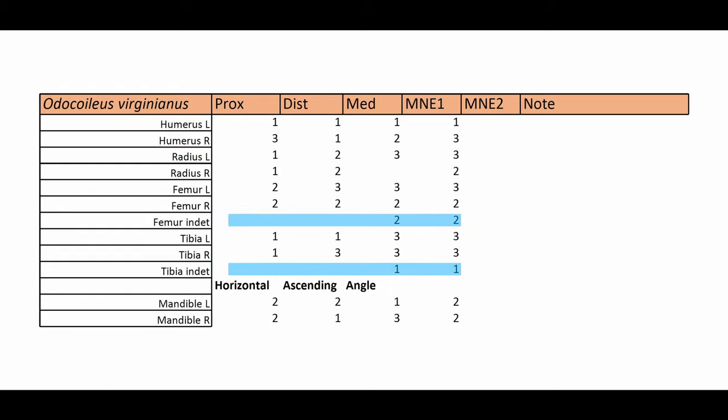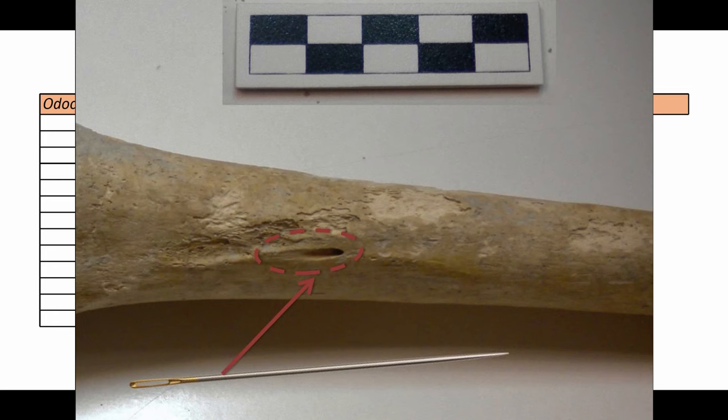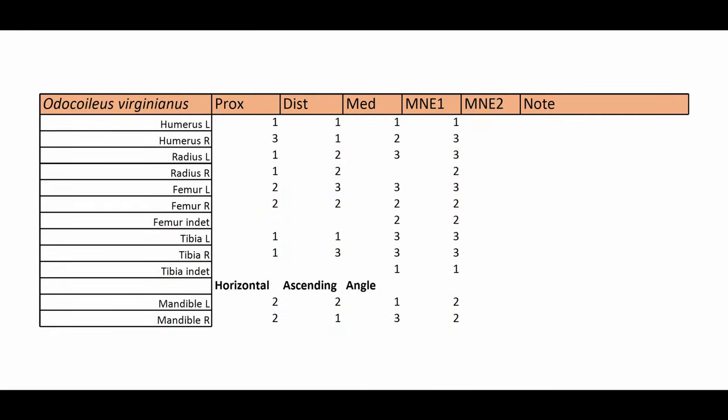So for the femur and the tibia, we have those leftover indeterminate side MNEs. And this can happen because there are small holes in these leg bones called foramina, nutrient foramina that are very distinctive in shape and orientation. But the actual shape of the bone fragment itself that we're dealing with might not allow me to determine which side it came from. And the medial sections are already all accounted for on both the right and the left elements. So in this case, for the tibia, we definitely have three right and three left. And then there's also one more tibia from an indeterminate side. So there's seven tibias represented in this sample.